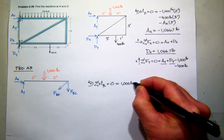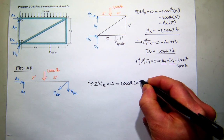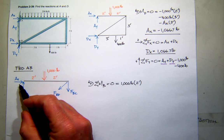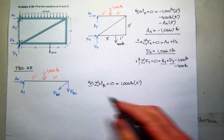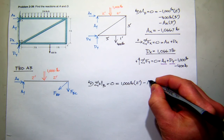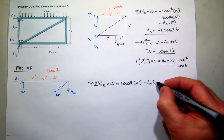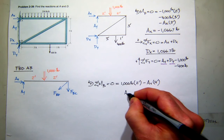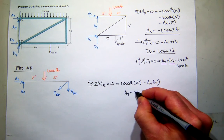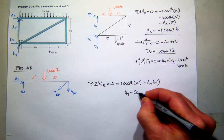Does Ax create moment about B? It does not. What about Ay? The way I've drawn it here, is that positive or negative moment? Negative. So I'll have Ay. And what's its moment arm? Four. So it looks like Ay is 500 pounds.